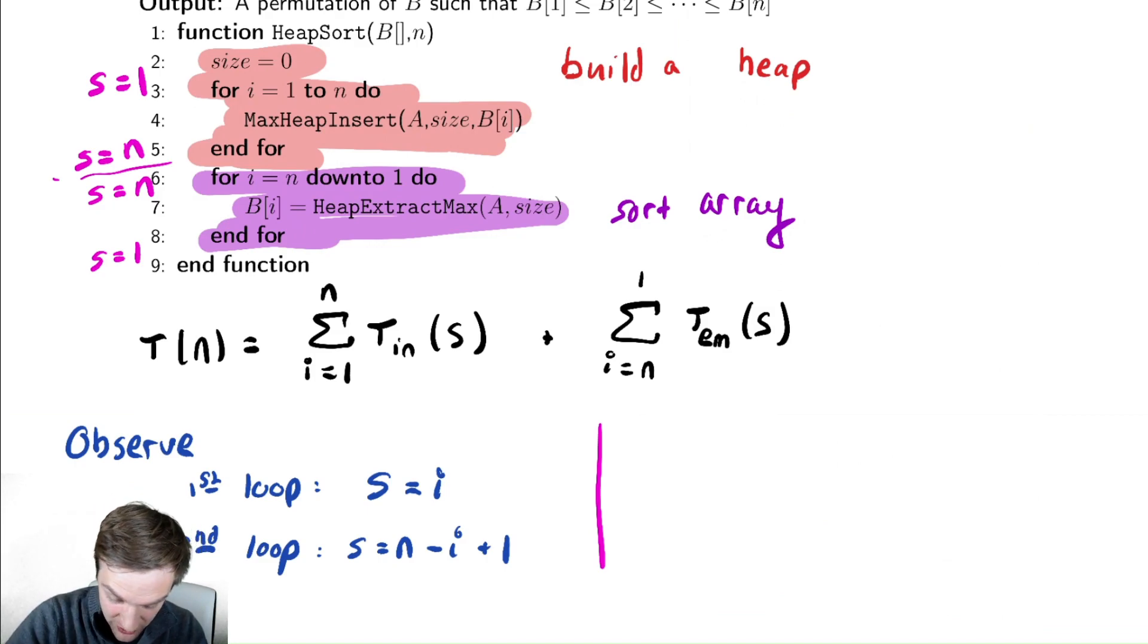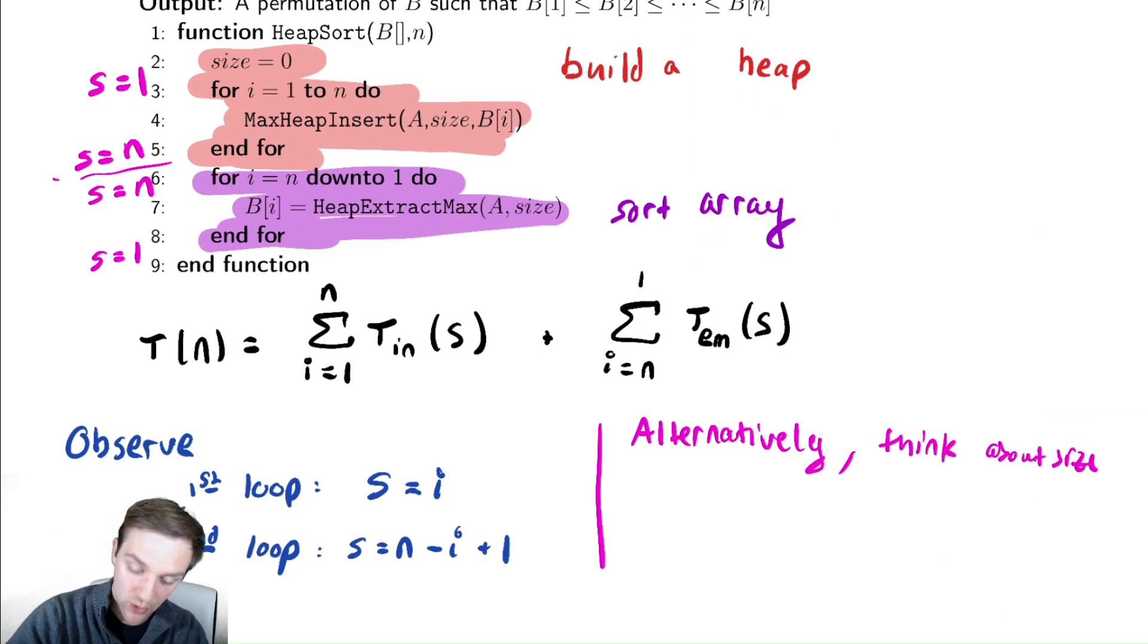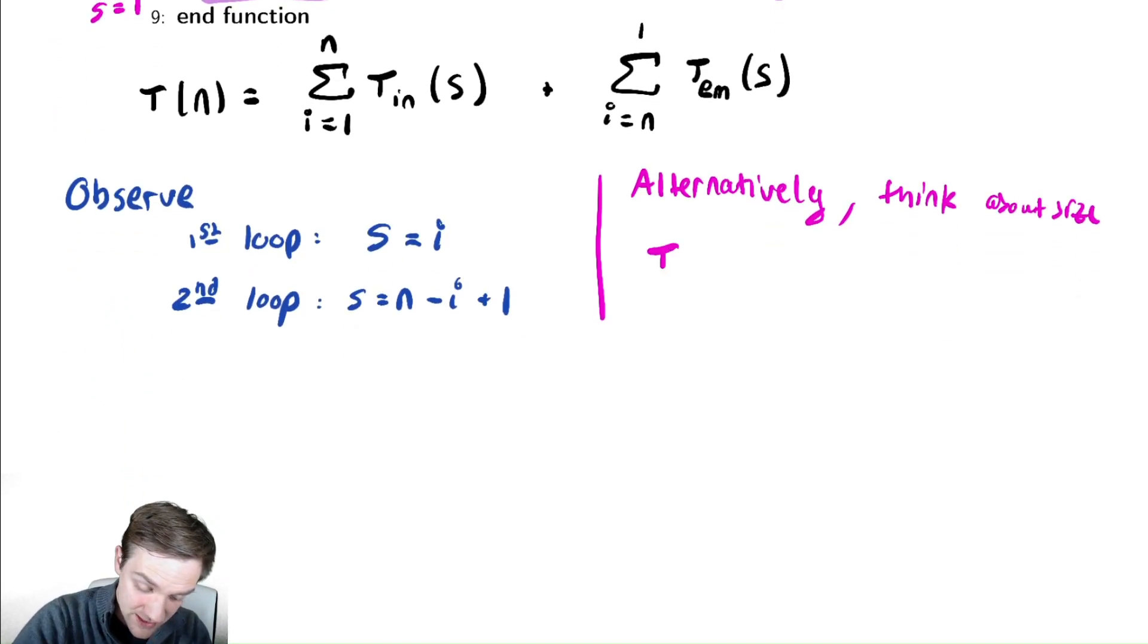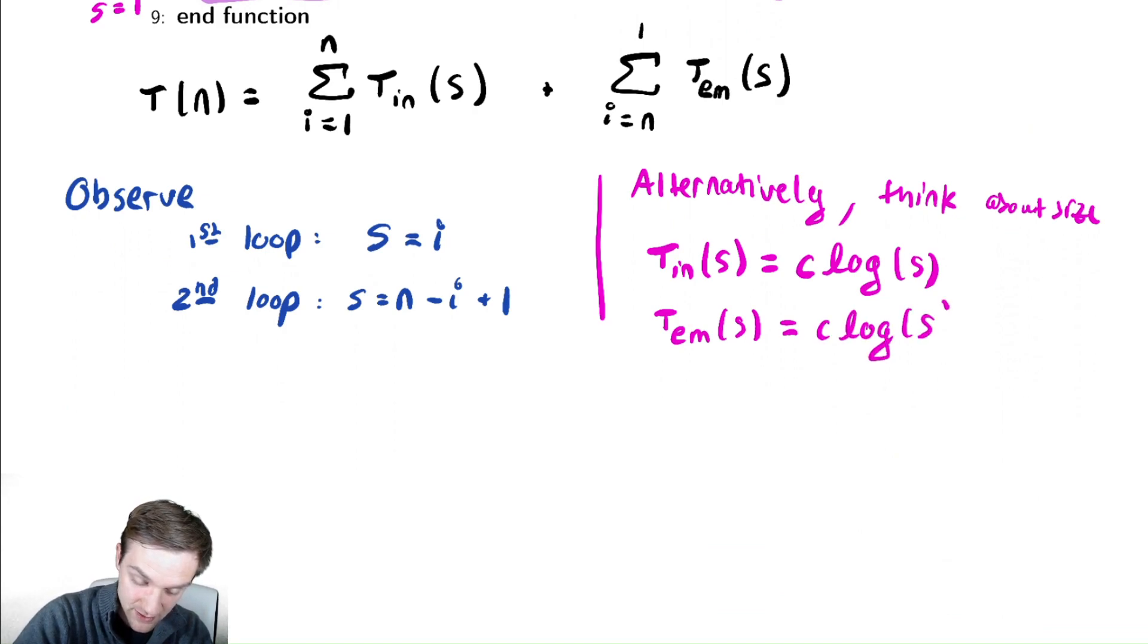So we could alternatively, alternatively, think about size. I'm going to do that just to get us used to it. So, we know the time it takes to insert as a function of the size is equal to log of s. Let's make that a little more precise and put a constant out front because it will take some constant amount of time to execute those operations. And also, the time it took to extract the maximum element as a function of the size was also log of s.